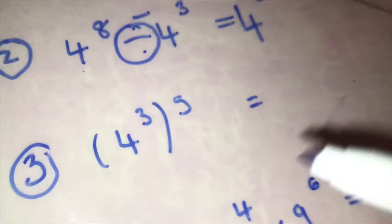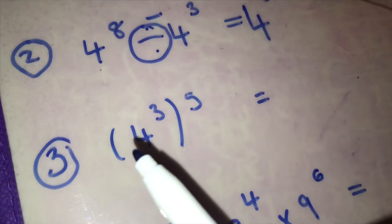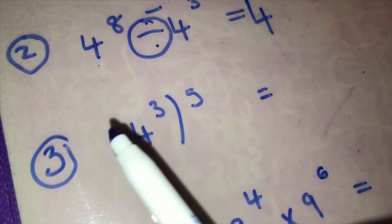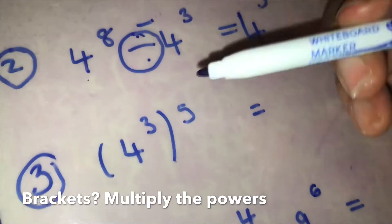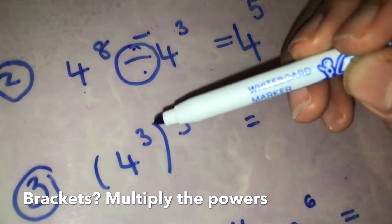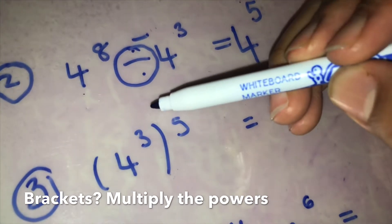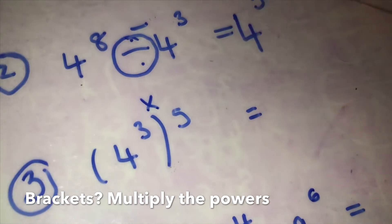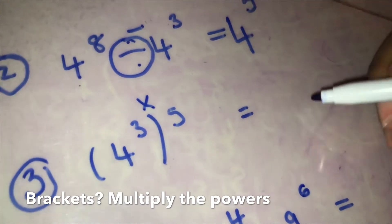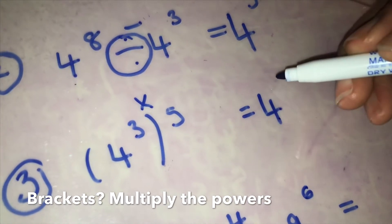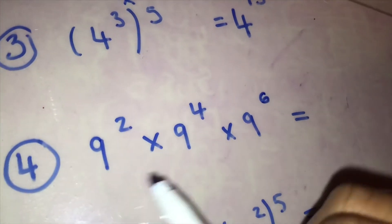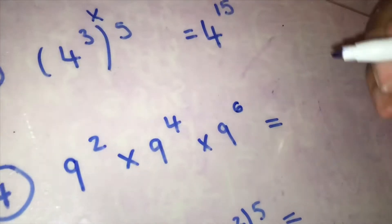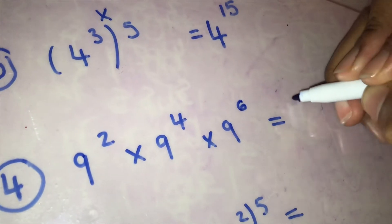This one here — four cubed is in the brackets to the power of five. When they're in brackets, brackets always means times, so three times five — four to the power of three times five, which is fifteen.